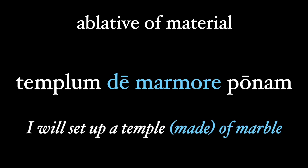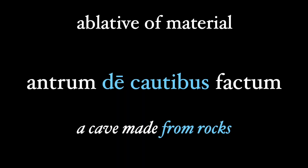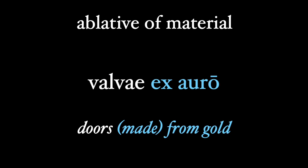The ablative of material is developed from the ablative of source. The material that an object is made of is put in the ablative case, usually with a preposition. So templum de marmore ponam — I will set up a temple made of marble; de marmore is our ablative of material. We could have a cave made from rocks: antrum de cautibus factum. Or doors made from gold: valvae ex auro. This ablative of material is dependent on the noun valvae rather than any verbal construct. Ex is the common preposition when this ablative comes after a noun.